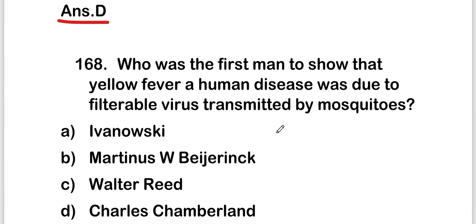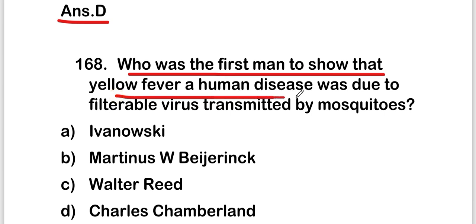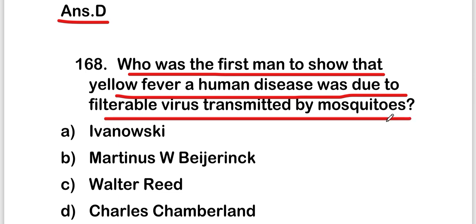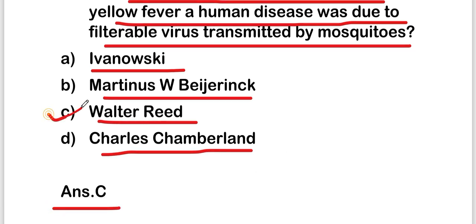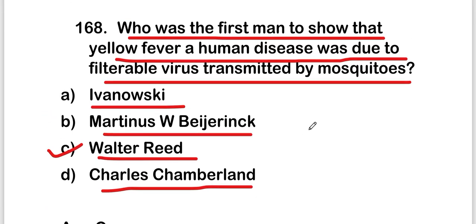Next question: who was the first person to show that yellow fever, a human disease, was due to a filterable virus transmitted by mosquitoes? Options: Ivanovski, Martinez Begerink, Walter Reed, or Charles Chamberlain. The right answer is option C — Walter Reed. He showed that yellow fever was due to a filterable virus transmitted by mosquitoes.